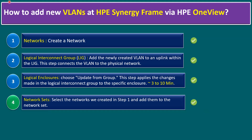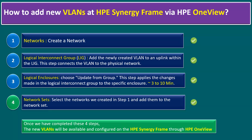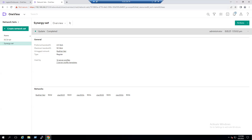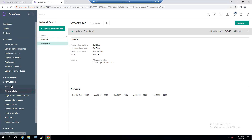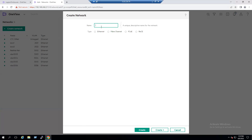Using these four steps we can add new VLANs to the HPE Synergy Frame through HPE OneView. Once completed, the new VLANs will be available and configured. To recap: step one, create the new network/VLAN; step two, add the newly created VLAN to the Logical Interconnect Group; step three, update the Logical Enclosure; step four, update the Network Set. The same procedure applies if you want to add multiple VLANs.